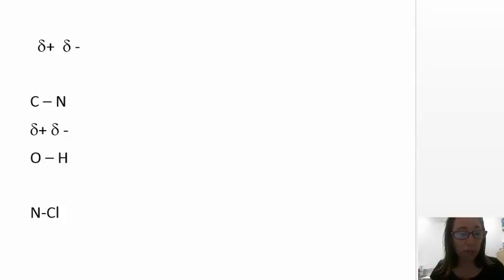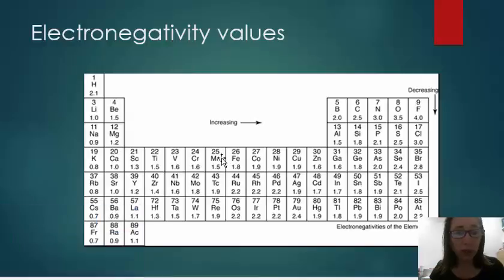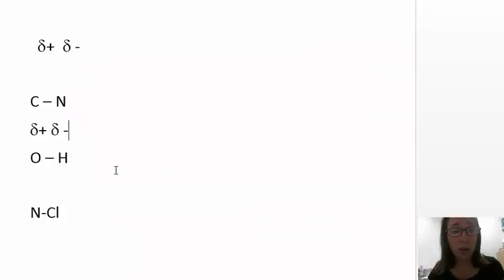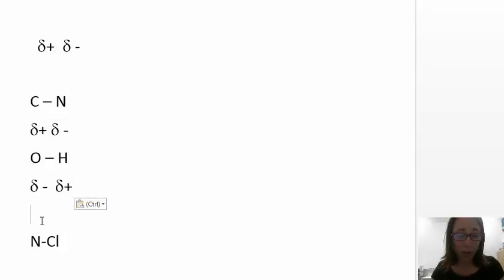So if we look at our scale, oxygen is 3.5 and hydrogen is 2.1. So yeah, that's definitely very polar. And oxygen has the larger value, so it's going to have the partial negative. So oxygen gets the partial negative, and hydrogen gets the partial positive.